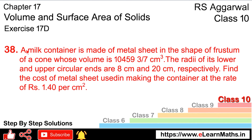Let's do question number 38 of XI 17D. Question number 38 is: a milk container is made of metal sheet in the shape of a frustum of a cone, whose volume is 10459 and 3/7 cm cube. The radius of its lower and upper circular ends are 8 cm and 20 cm respectively.